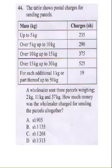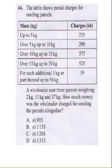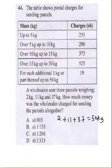The next question shows a table of postage charges for sending parcels. A wholesaler sends three parcels weighing 2 kg, 11 kg, and 37 kg. How much is the wholesaler charged in total? First, sum up the total weight: 2 plus 11 plus 37 gives us 50 kg.